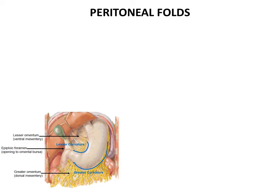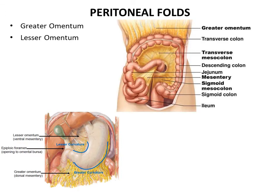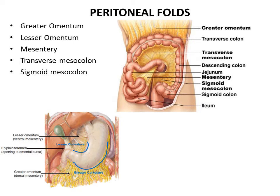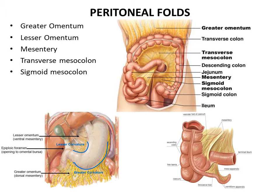The peritoneal folds are mainly present in relation to mobile organs. The peritoneal folds related to the stomach are the greater and lesser omentum, attached to the greater and lesser curvatures of the stomach. In the small intestine, the duodenum is fixed whereas the jejunum and ileum are suspended by a fan-shaped fold called the mesentery. In the large intestine, the transverse colon is suspended by the transverse mesocolon and the sigmoid colon by the sigmoid mesocolon. The appendix is suspended by a triangular fold called the mesoappendix. Ligaments are also peritoneal folds present mainly in relation to the liver and spleen.